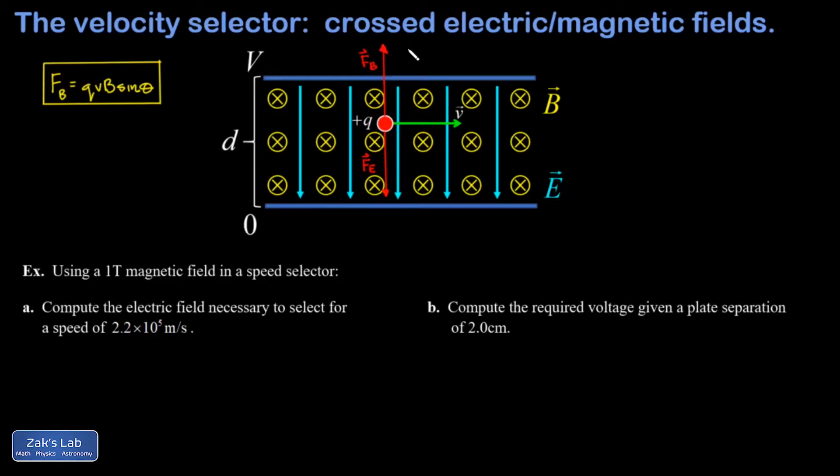So now it makes sense that these two forces can balance each other. They point in opposite directions. And then to work out the relationship between the magnitude of the electric field and the magnetic field, I just say the forces are balanced, so Fb is equal to Fe.